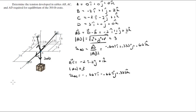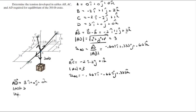The same thing goes for AD. AD is equal to 3i + 0j + 0k, which means the magnitude of AD is equal to 3, and the unit vector in the AD direction is simply 1i + 0j + 0k.